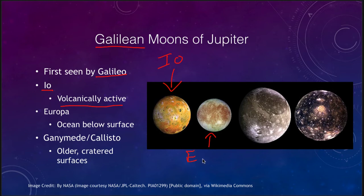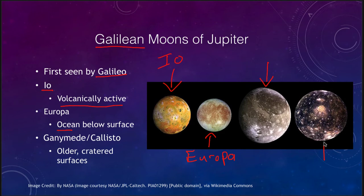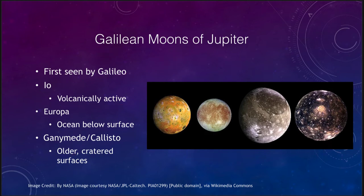Europa has an ocean below its surface. We see a surface of water ice, but down below that there is a liquid water ocean. Ganymede is the largest moon in the solar system, and Callisto, the outermost of Jupiter's four Galilean satellites, still has some structures but generally has an older and more cratered surface. We don't see any craters on Io, just a handful on Europa, but many more on Ganymede and Callisto.